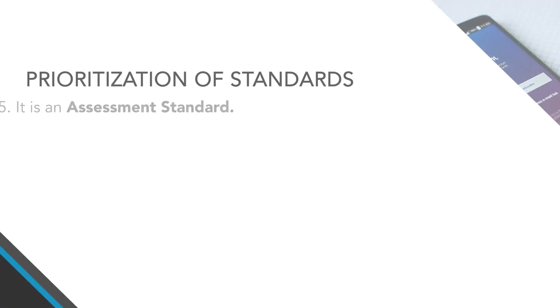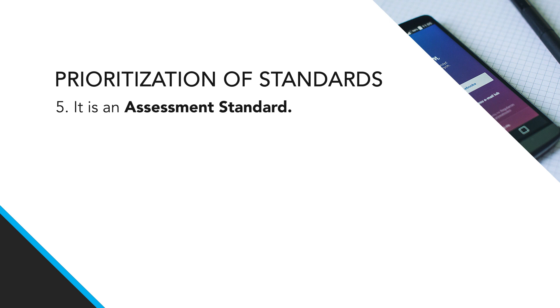The fifth category is assessment. This doesn't mean you overtly teach and assess the standard — in a year-long context, you've already committed to that for every standard. Rather, if a standard doesn't fit endurance, readiness, leverage, or teacher's choice, but it appears on a gateway assessment — a test the child must do well on to move on, which you don't control — then you prioritize it because it's on that test. We see this with certain AP standards or DP standards in IB schools.